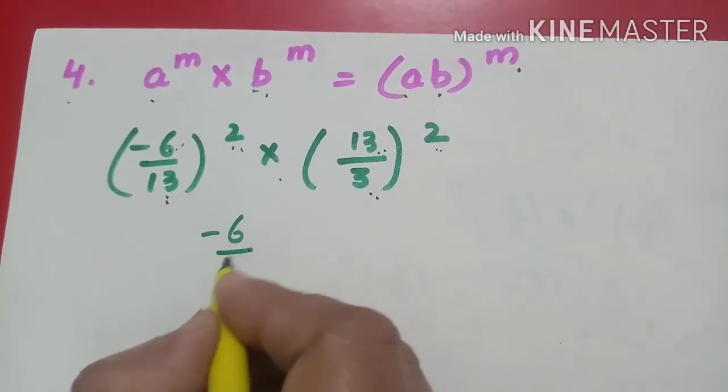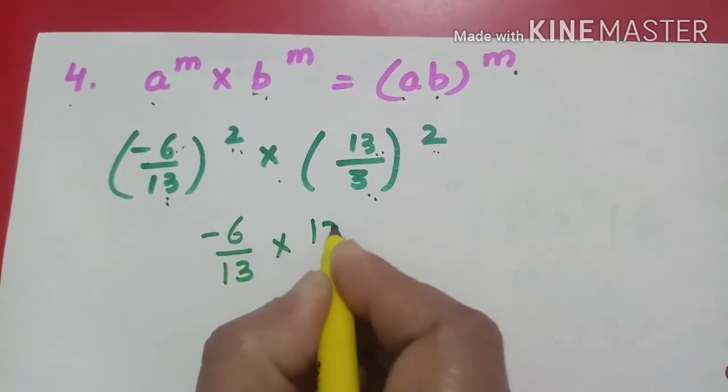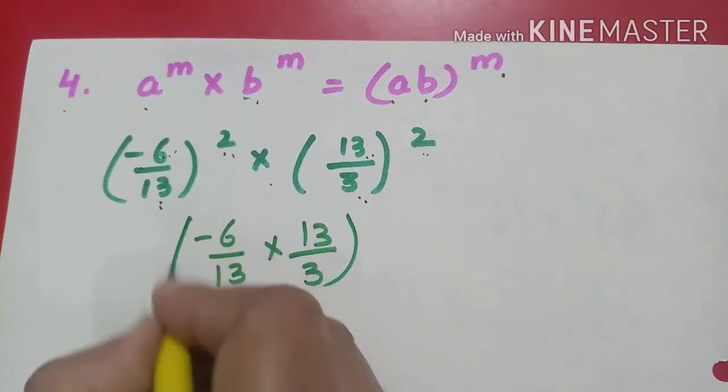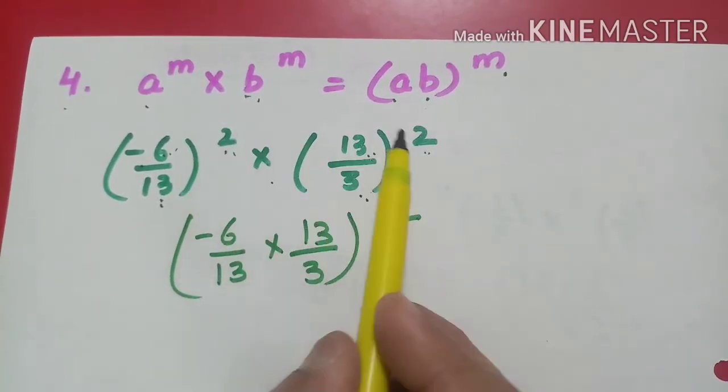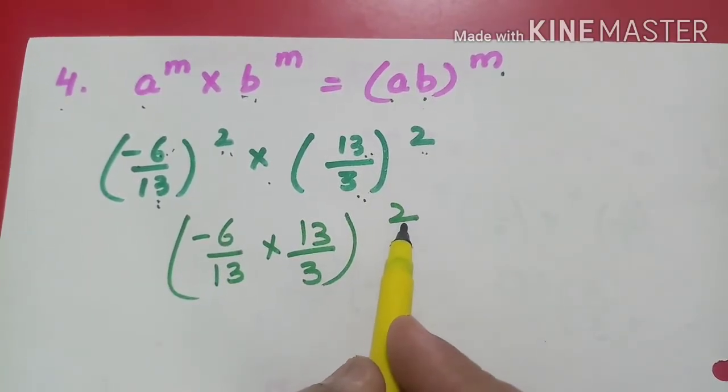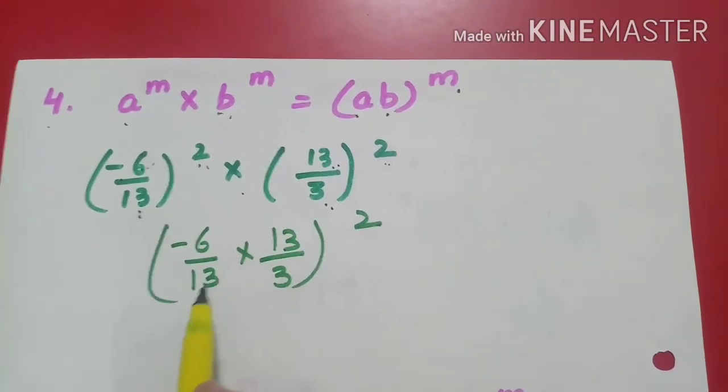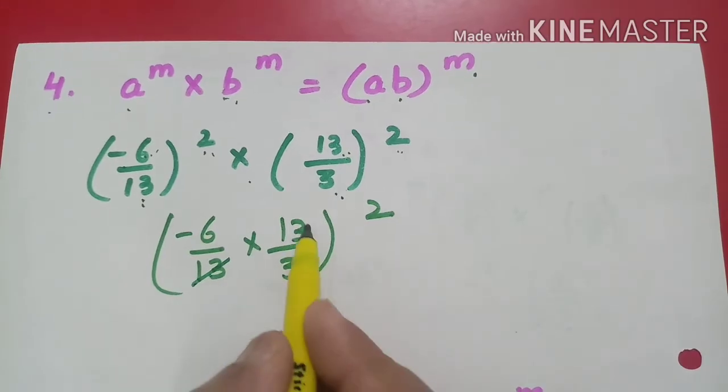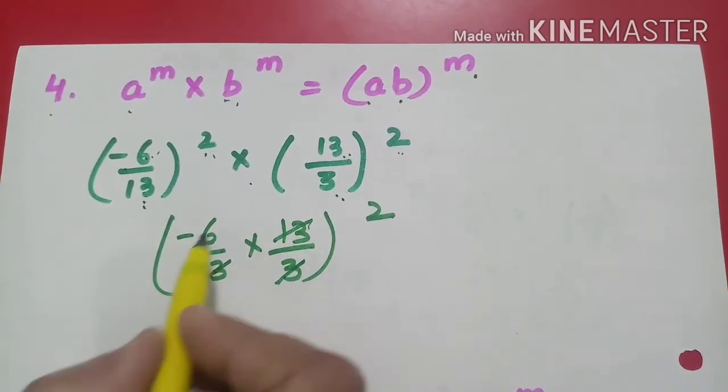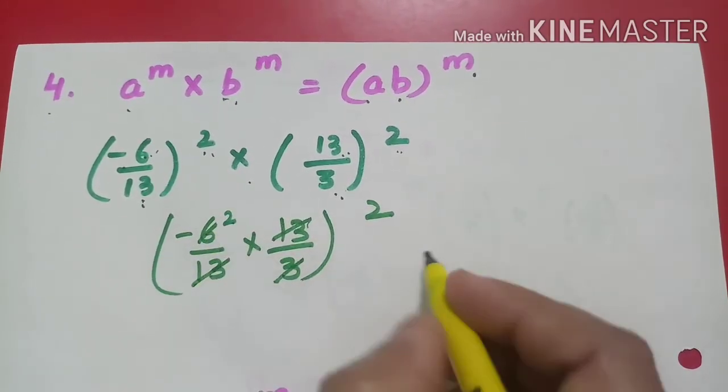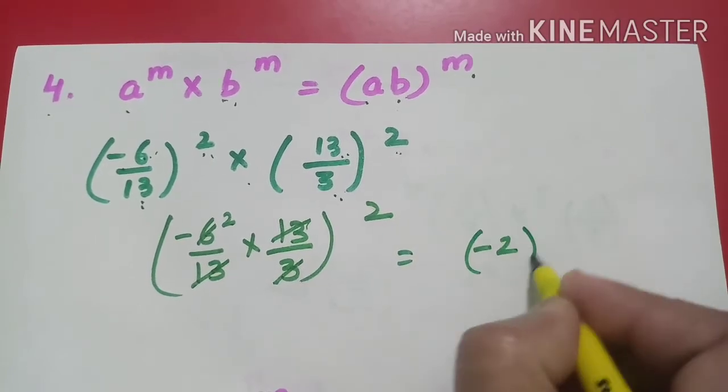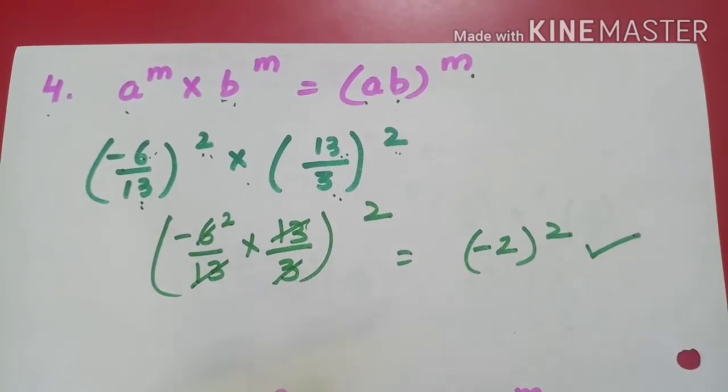So what will I do? I will multiply both bases with the same power. Since both powers are 2, the power remains the same and the bases get multiplied. When we simplify, 13 gets cancelled with 13 and 3 with 6. So it becomes (-2)². That will be my answer.